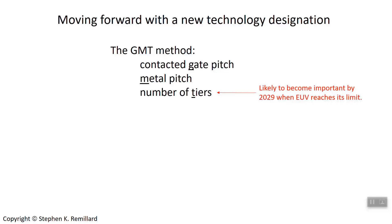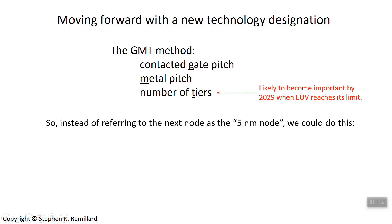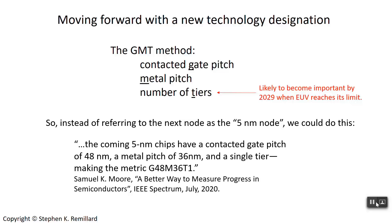For example, the 5 nanometer node can be described with a 48 nanometer gate pitch, a 36 nanometer metal pitch, and a single tier — so it would be designated G48, M36, T1. Instead of saying '5 nanometer node,' you say G48, M36, T1, but you're also giving information that really describes what's on that chip.